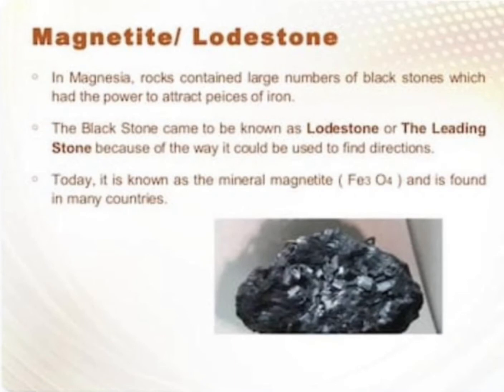वो rock जो थी, वो magnetite rock थी। Magnes के नाम पे ही उस rock का नाम रखा गया — magnetite — जिसके अंदर magnetic material था। In Magnesia, rocks contained a large number of black stones which had the power to attract pieces of iron. Magnesia में ऐसी rocks available हैं जो iron के pieces को attract करती हैं।